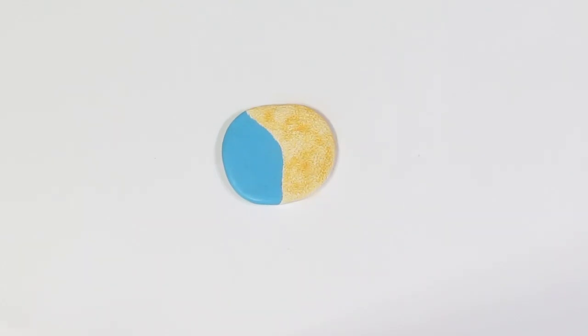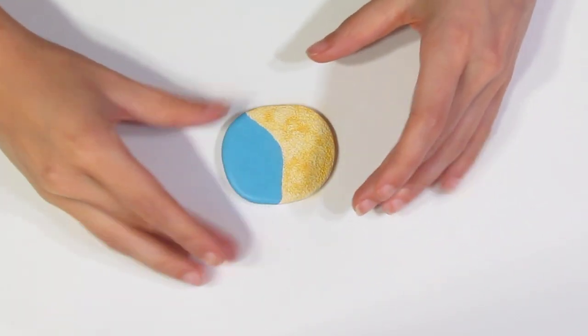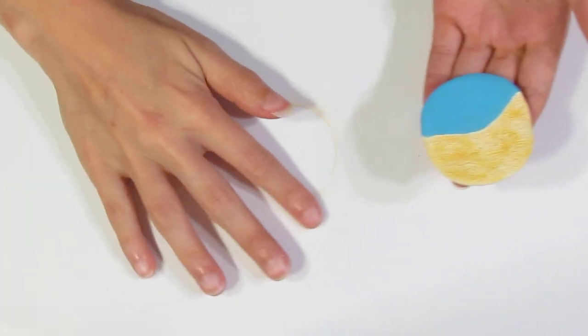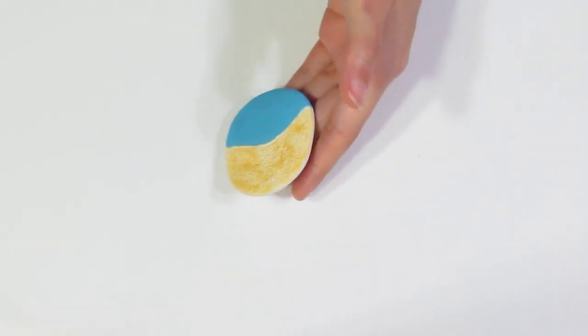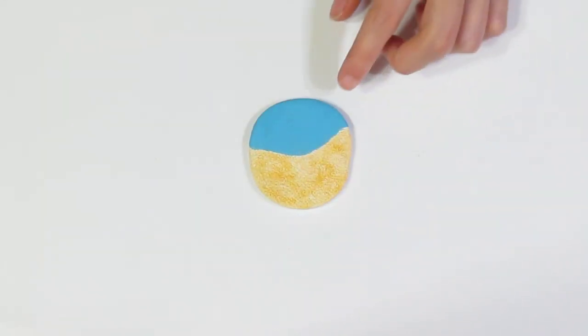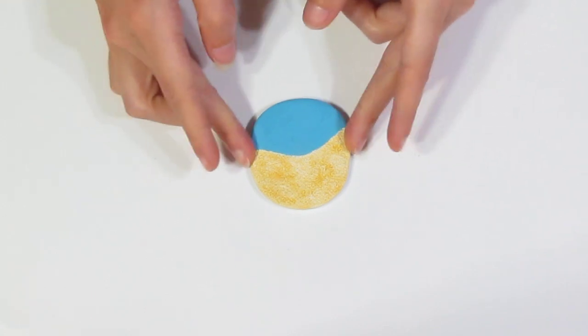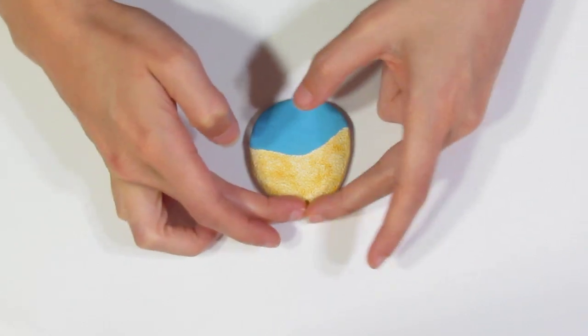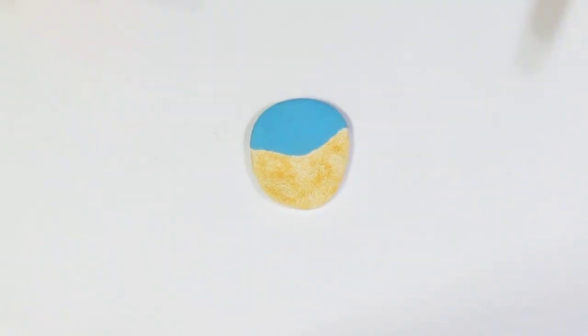I'm actually not going to be using a cutter on this. I think I'm just going to leave it the exact shape that it is. Now that we've done that, I'm just gently going to press around these sides and give it just a little shape change.